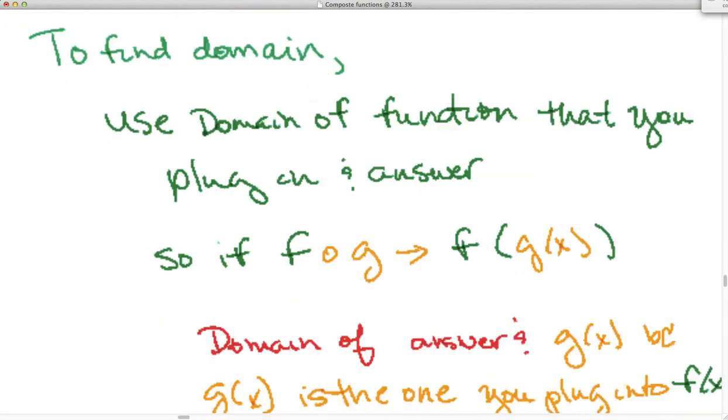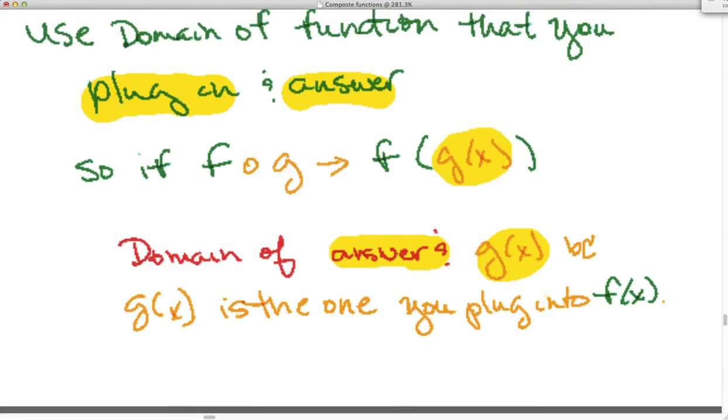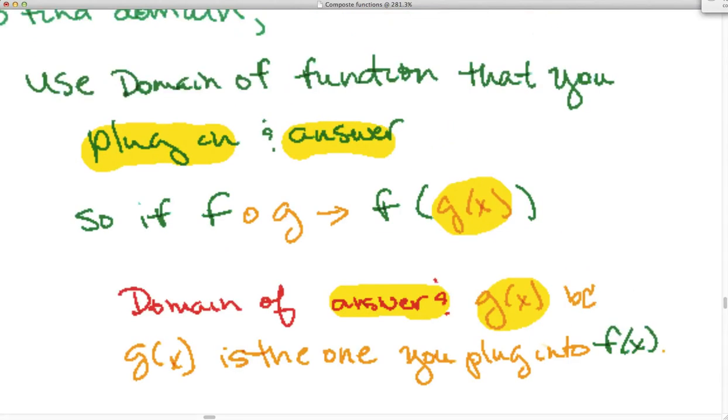To find the domain, you're going to use the domain of what you plug in and the final answer. So if I'm looking at fog, that's going to be the domain of g of x and the final answer. Or if I was looking at gof, it would be f of x and the answer. Okay?